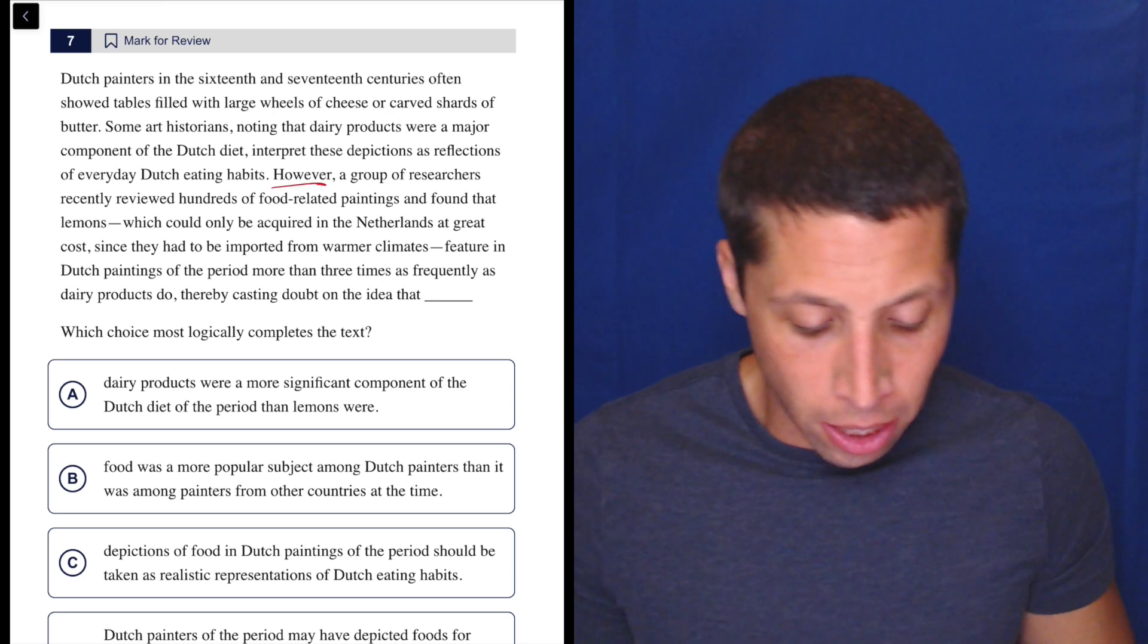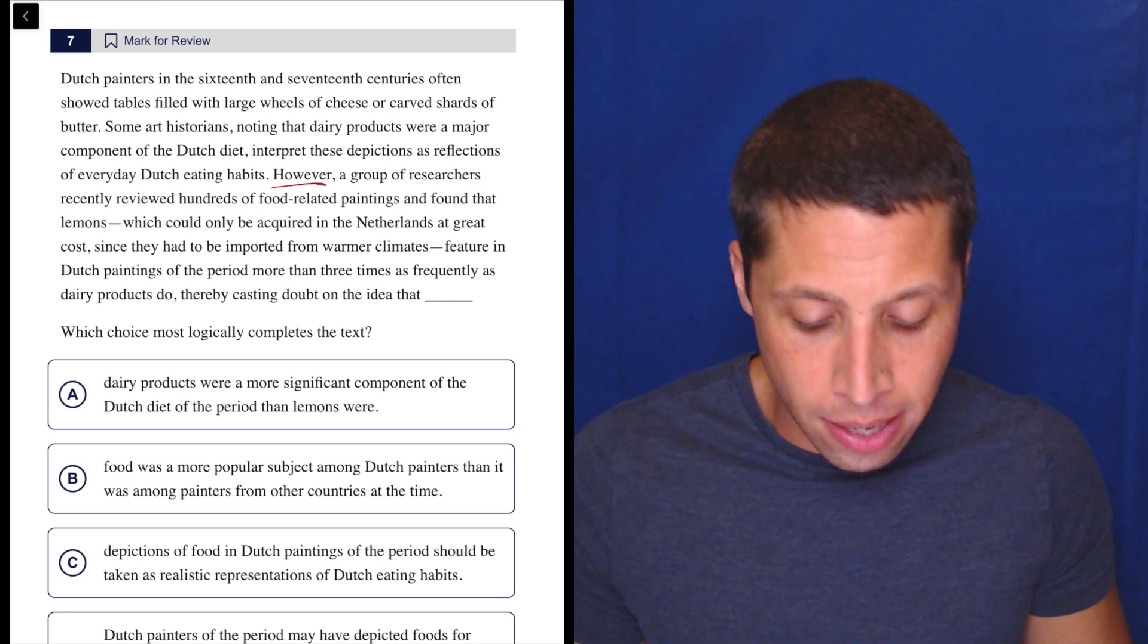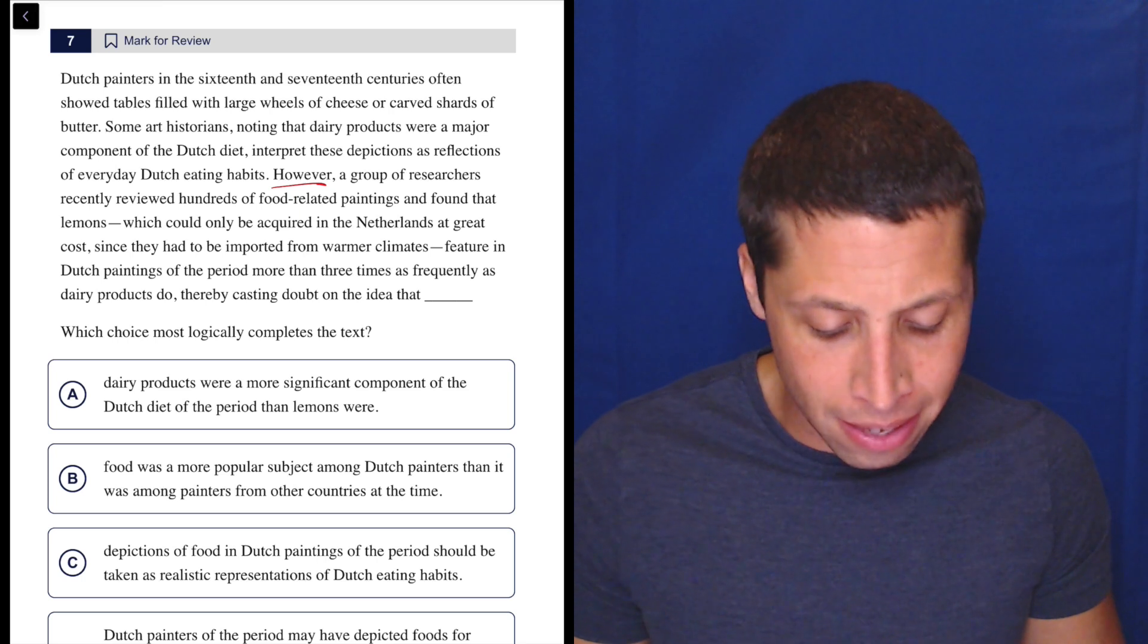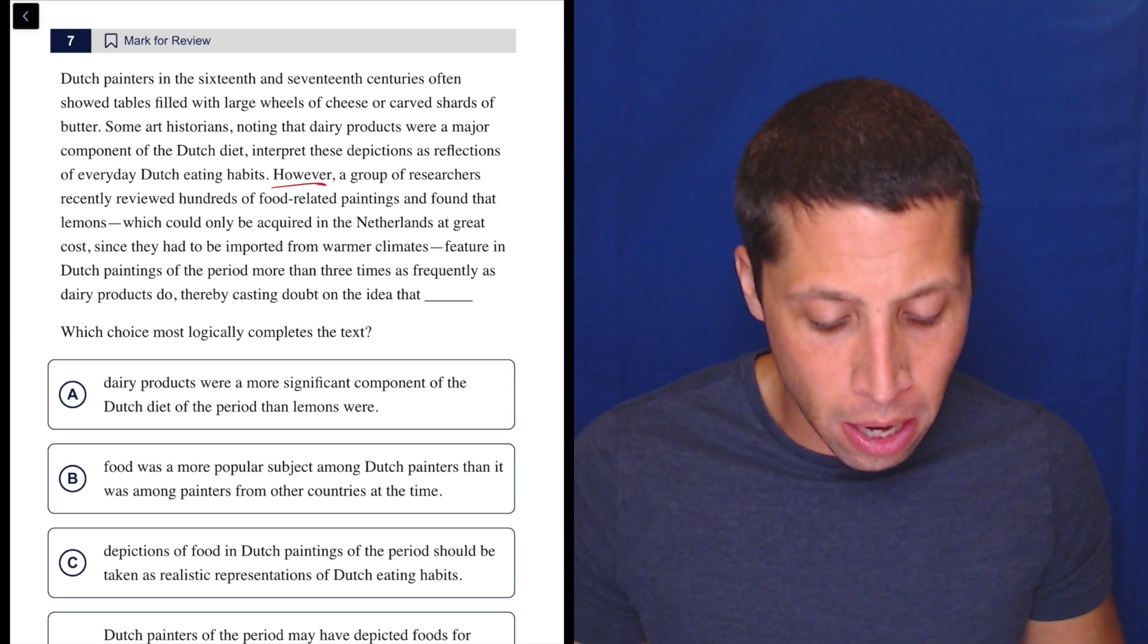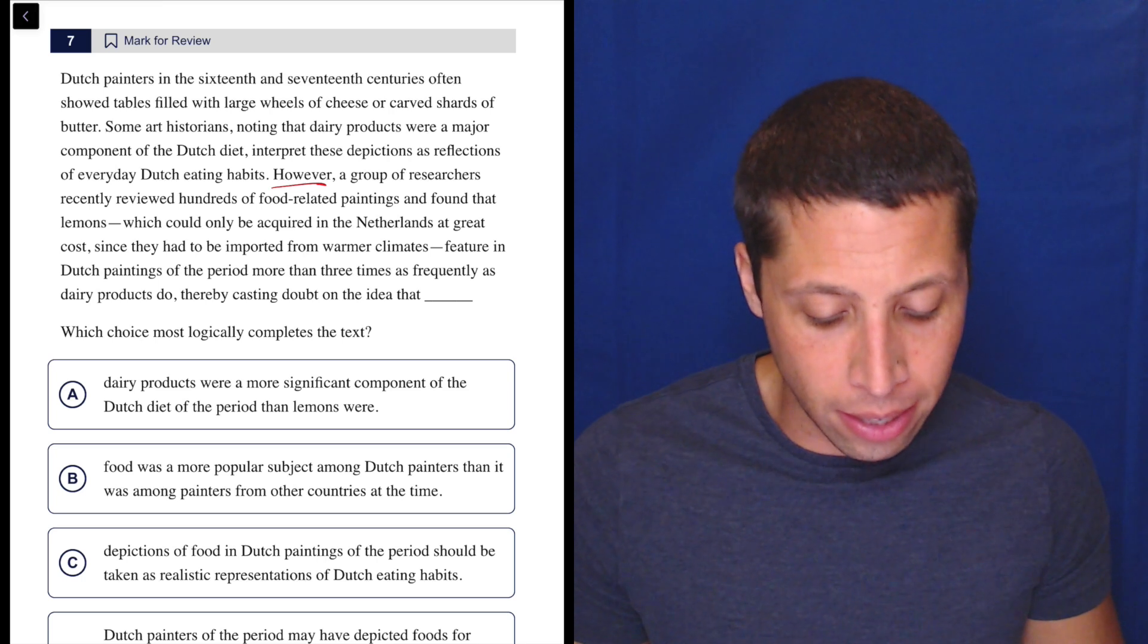However, a group of researchers recently reviewed hundreds of food-related paintings and found that lemons, which could only be acquired in the Netherlands at great cost since they had to be imported from warmer climates, feature in Dutch paintings of the period more than three times as frequently as dairy products do, thereby casting doubt on the idea that... well, okay.